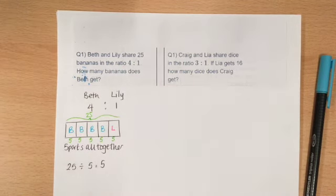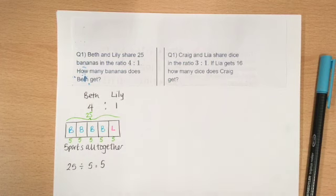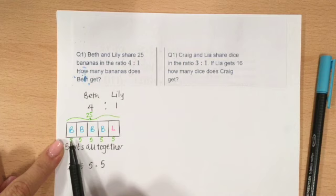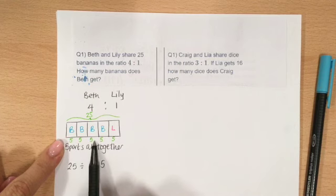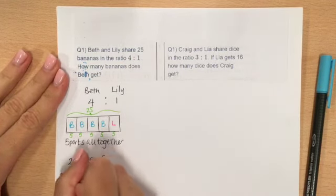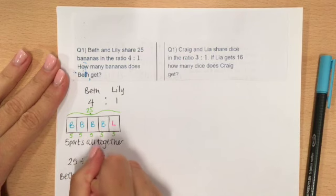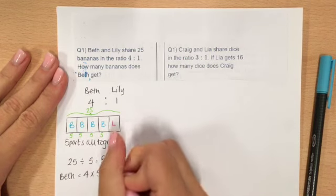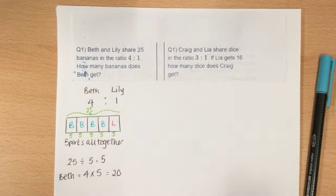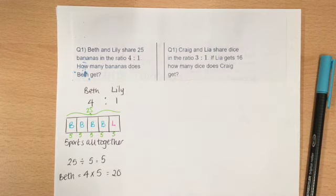So now we've calculated that, I can easily get to the answer. It tells me how many bananas does Beth get. Well, Beth gets 4 parts, so she's got 4 fives. So Beth equals 4 times 5, which is 20. So she gets 20 bananas — nice and straightforward. So that's how you would share an amount in a ratio.